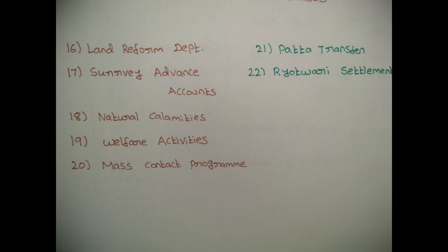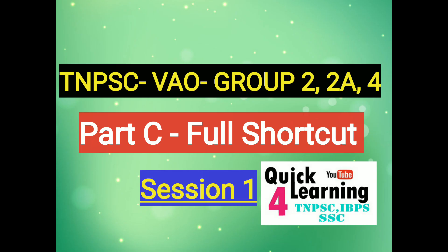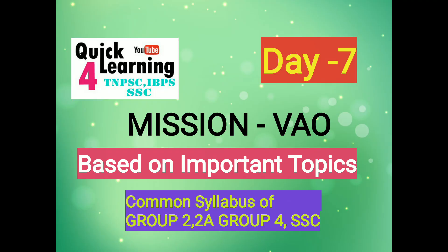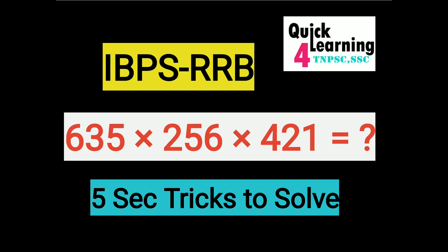There is a Mass Contact Program in Tamil. They have a lot of people who want to do things like that. That is the Mass Contact Program. 21 is a good transfer. I think we can do the best in a land transfer. So how do we transfer it? It is a good transfer. We are going to learn how to write a basic concept in 2022.